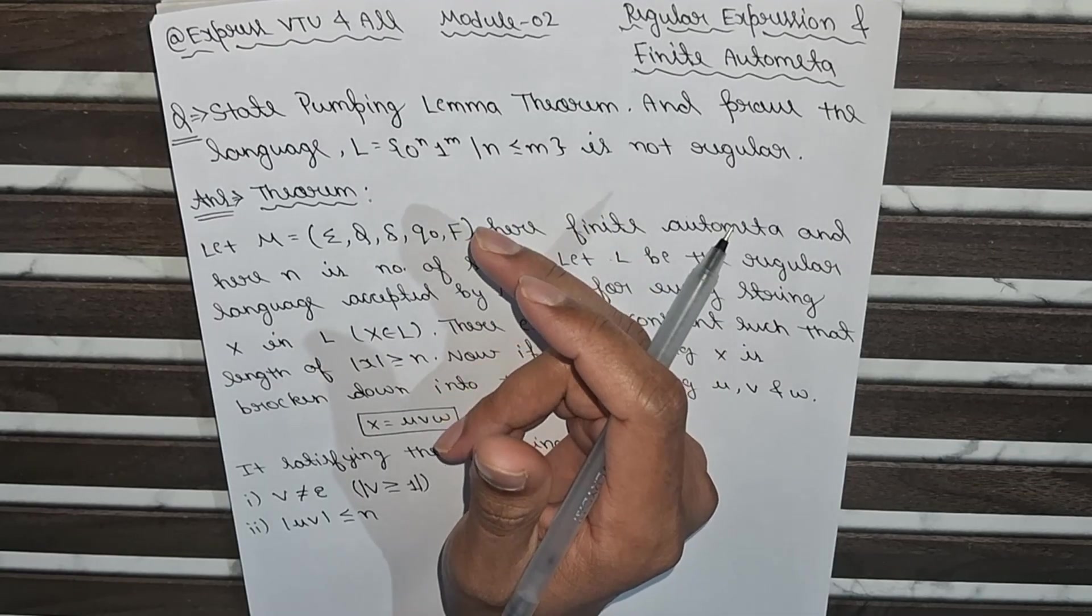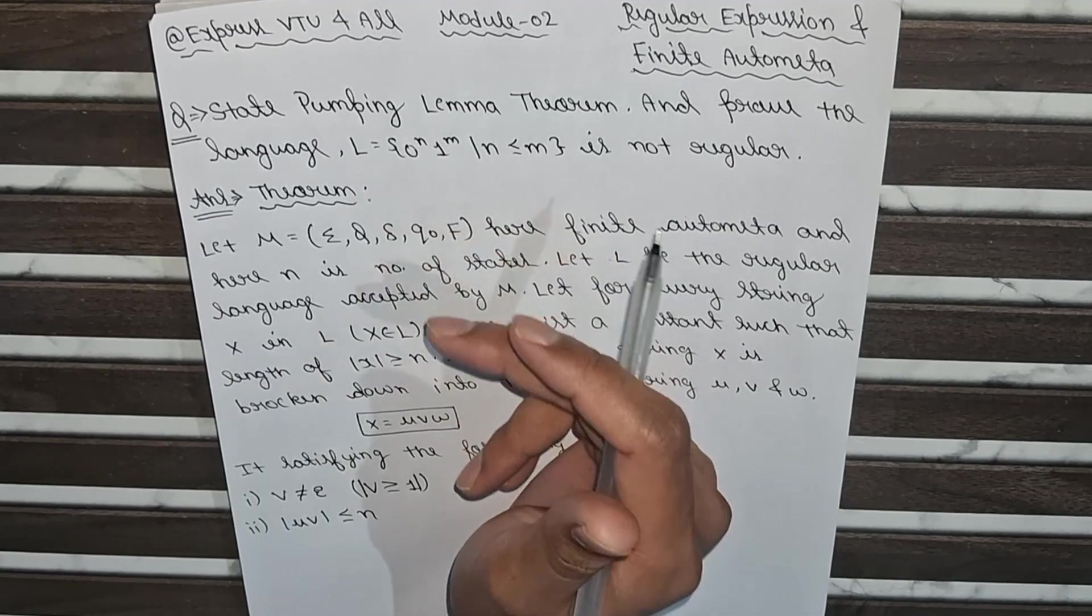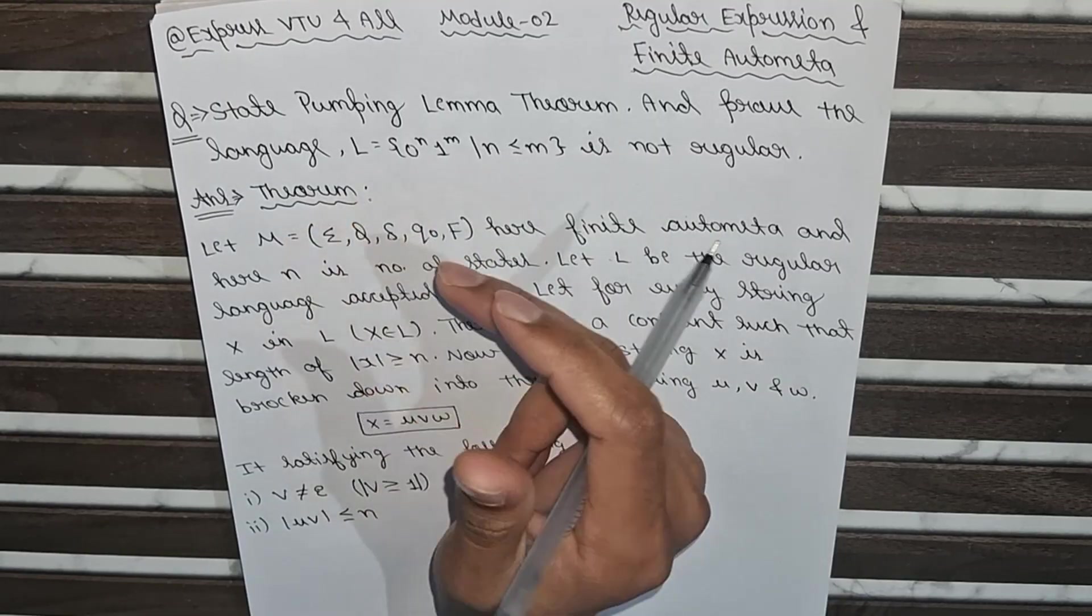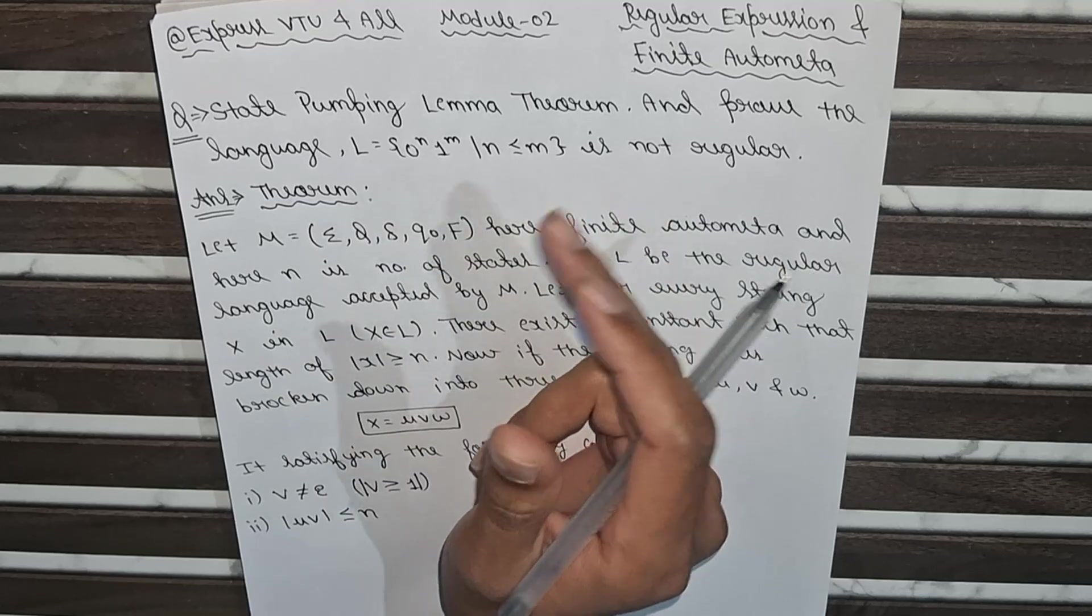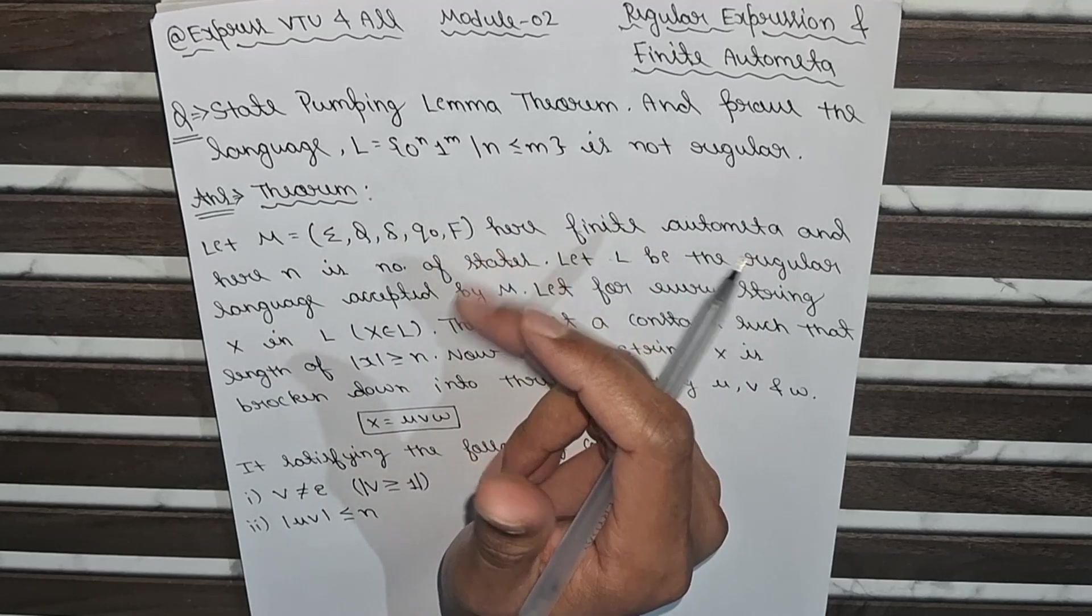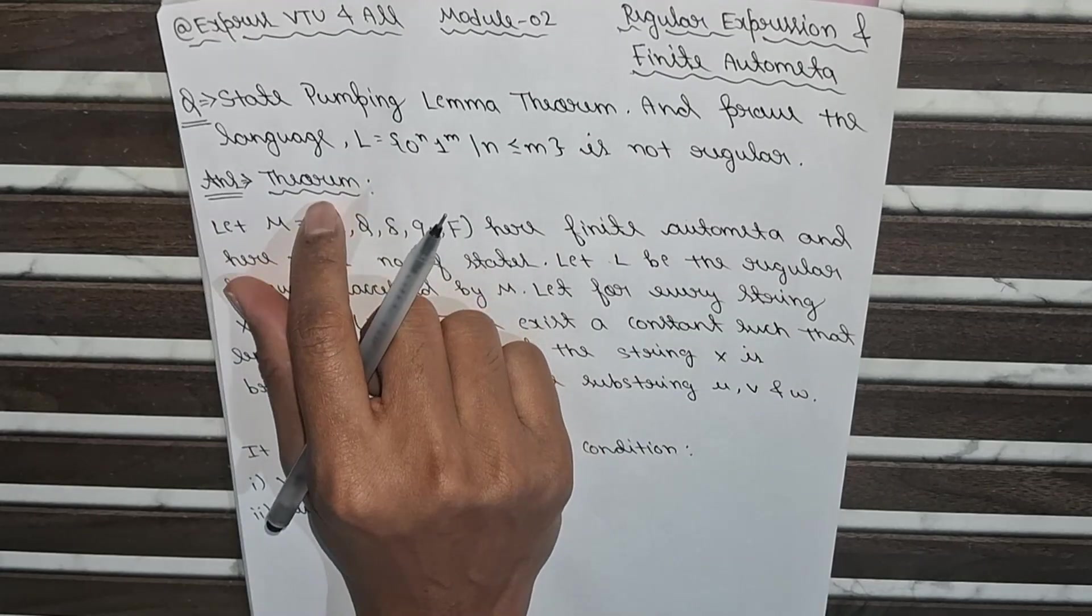First of all, let's understand what this theorem is all about. We know that regular languages can be represented using finite automata, but sometimes we need to prove that a language is not regular. That's where the pumping lemma helps us. So what does the theorem state?